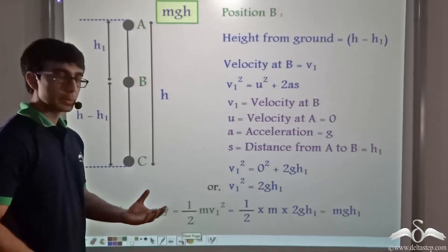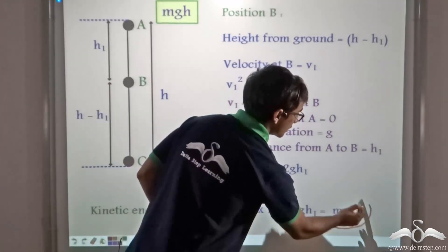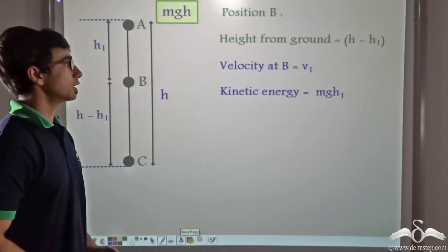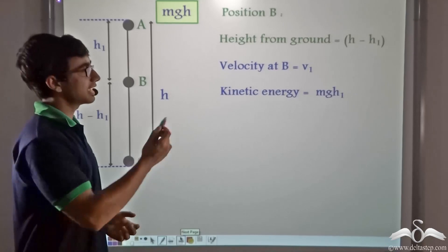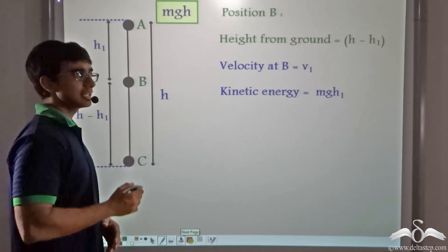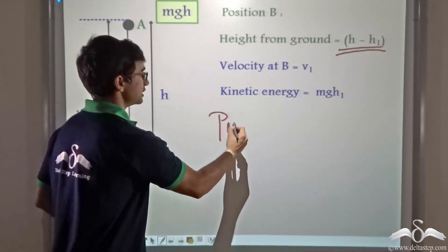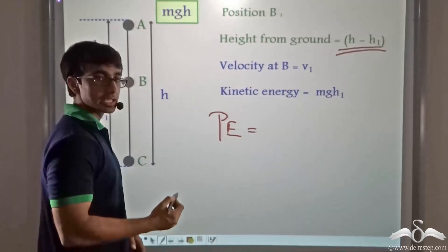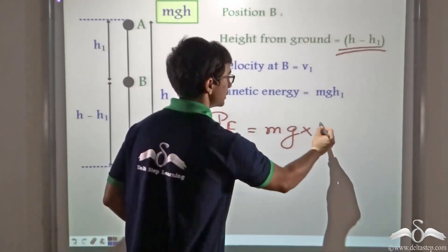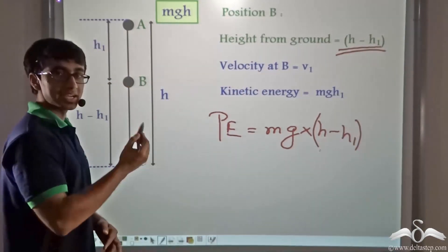So thus we can say that the kinetic energy of the ball at B is MGH1. Now we have found out the kinetic energy of the ball which is MGH1, and we also know that at B the ball is still at a height H minus H1 from the ground. So the potential energy PE will be equal to M × G × (H minus H1).